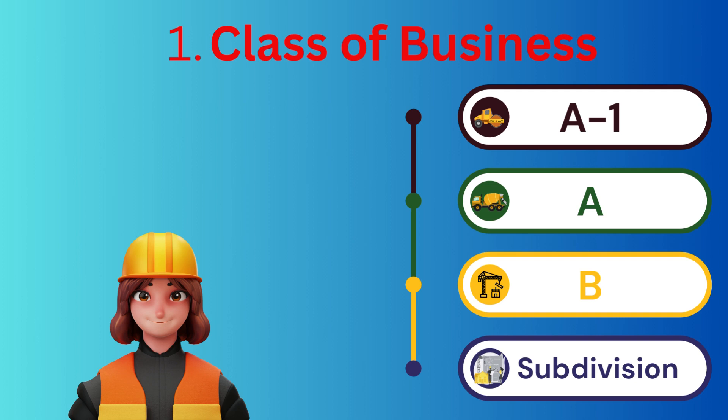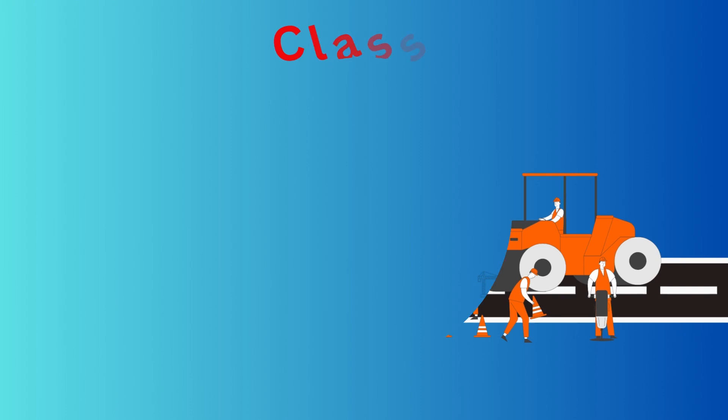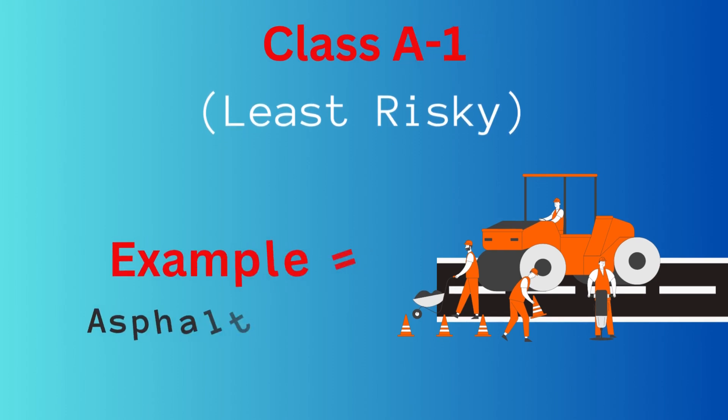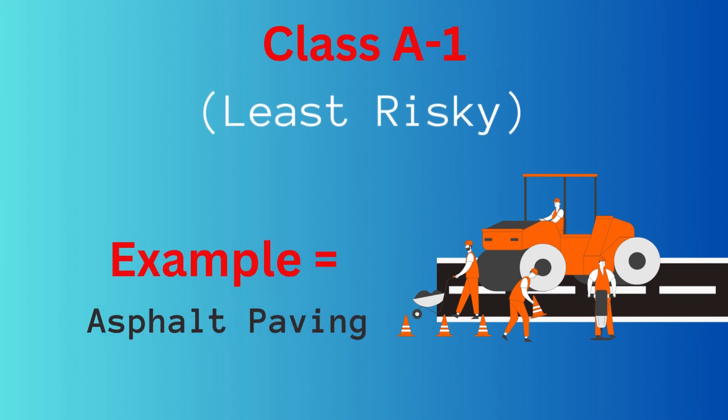Most construction work falls into one of four categories: class B, class A, class A1, and subdivision bonds. Class A1 is considered the least risky from a surety bond perspective. Asphalt paving falls into class A1.